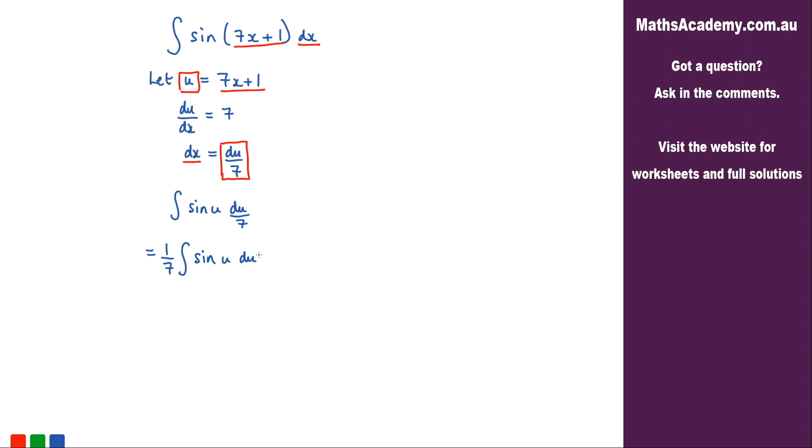The integral of sine is negative cosine. So what we have is negative 1 over 7 and cosine of u.